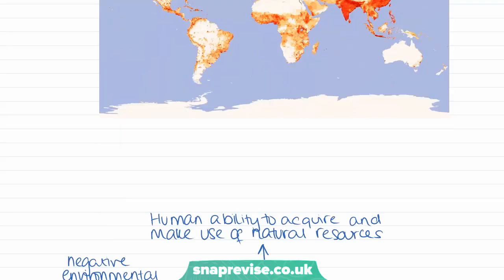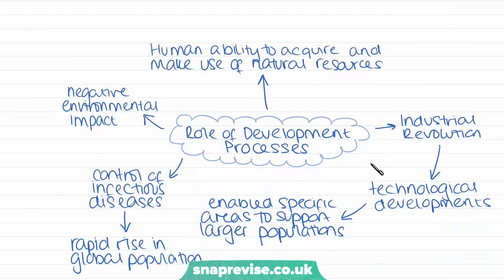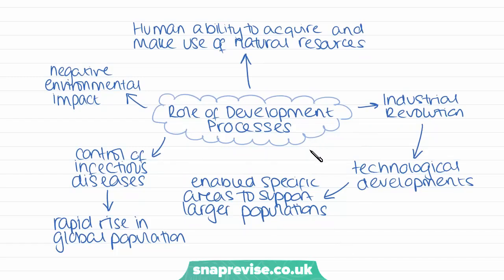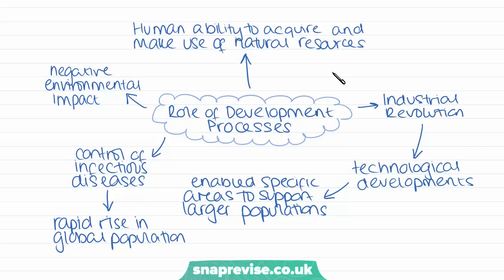Now I'm going to touch upon the role of development processes in influencing population parameters. The process of development has been a narrative associated with the human ability to acquire and make use of natural resources. Populations that have been able to make use of natural resources have become more developed, and those that haven't remain less developed.